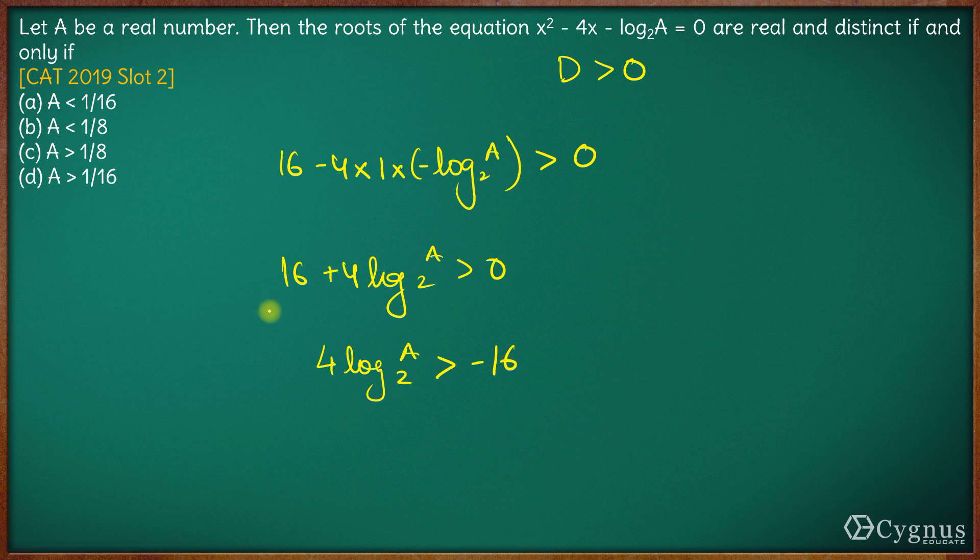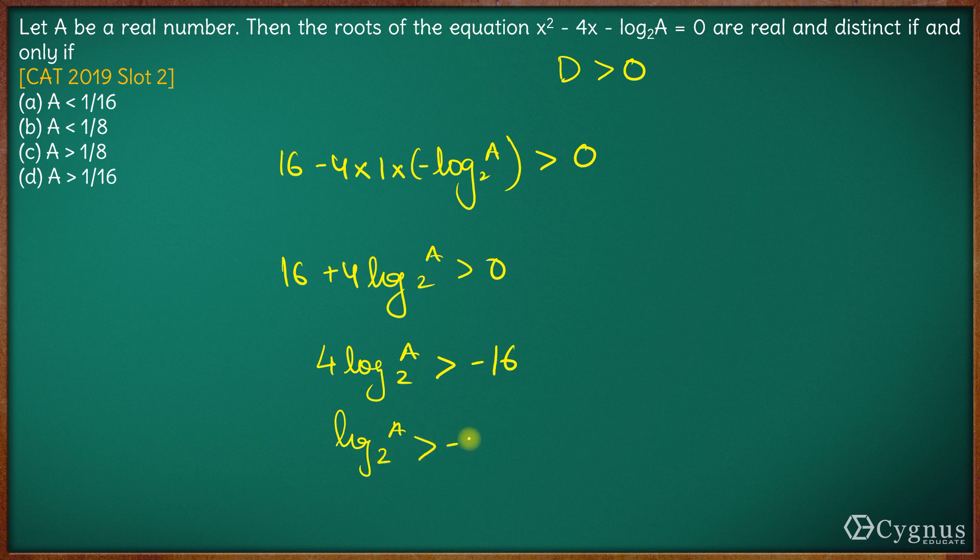Dividing the whole equation by 4, log₂(a) should be greater than minus 4. Now, for log₂(a) to be greater than minus 4, it means a should be greater than the base which is 2 to the power minus 4. A should be greater than 2^(-4) over here.